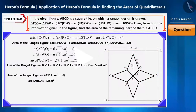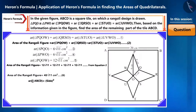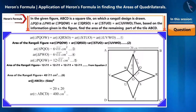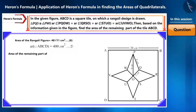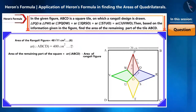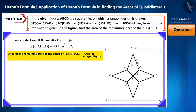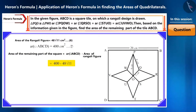Now let's find the area of the square tile ABCD. Friends, pause the video and solve it yourself. We obtained it as 400 square centimeters. Now we find the area of the remaining part of the square tile by deducting the area of the Rangoli from the area of the square tile. Substituting the values, the remaining area equals 400 minus 48√11 square centimeters.